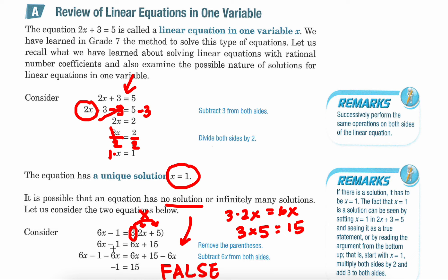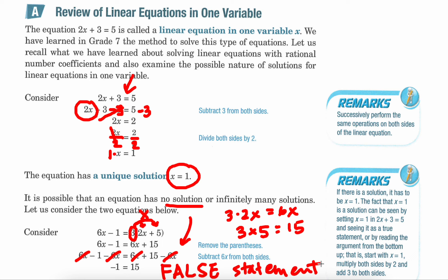Then it looks like I have 6x on both sides, so I can actually cancel out the 6x's on both sides by subtracting 6x. That's how I ended up with just negative 1 on the left-hand side and 15 on the right-hand side. That is a false statement because negative 1 is not equal to 15. Whenever you have a false statement, that tells you that you have no solution.